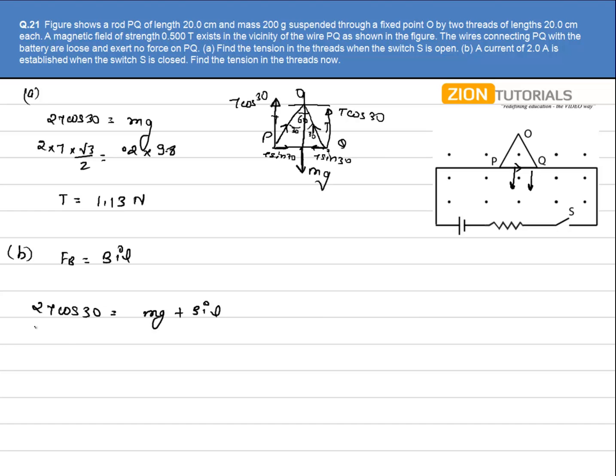Now just substitute all the values: 2 times T cos 30 is again root 3 by 2, 0.2 into 9.8. Magnetic field is given as 0.5 tesla, current is 2 amperes, and the length is 20 centimeters or 0.2 meters. Just solve this complete equation; you will get the value of tension as 1.25 N. That is the answer.